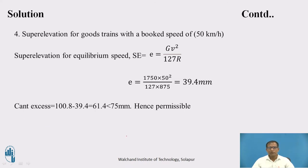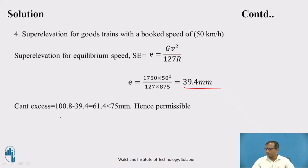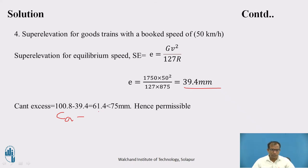For the third step, calculate the theoretical super elevation for goods trains. The goods train speed is 50 kmph. The super elevation required for 50 kmph comes to 39.4 mm. The cant excess equals actual cant CA minus the super elevation for 50 kmph (39.4 mm), giving 61.4 mm. The maximum allowable cant excess for BG track is 75 mm. Since 61.4 mm is less than 75 mm, it is permissible.